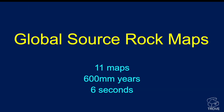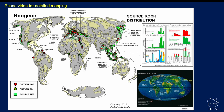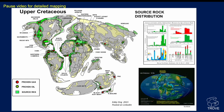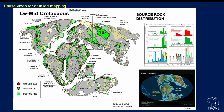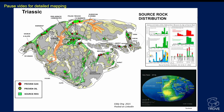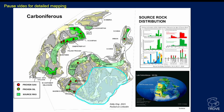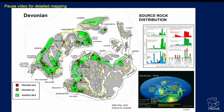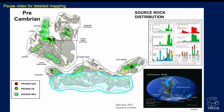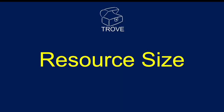I want to very quickly run through the global source rocks, and we're going to look at 11 maps covering 600 million years in six seconds. The idea is you can just pause this — we're going back through time into the Cretaceous, the Jurassic — and all these maps are great compilations put together by Eddie Young, showing the distribution through time.